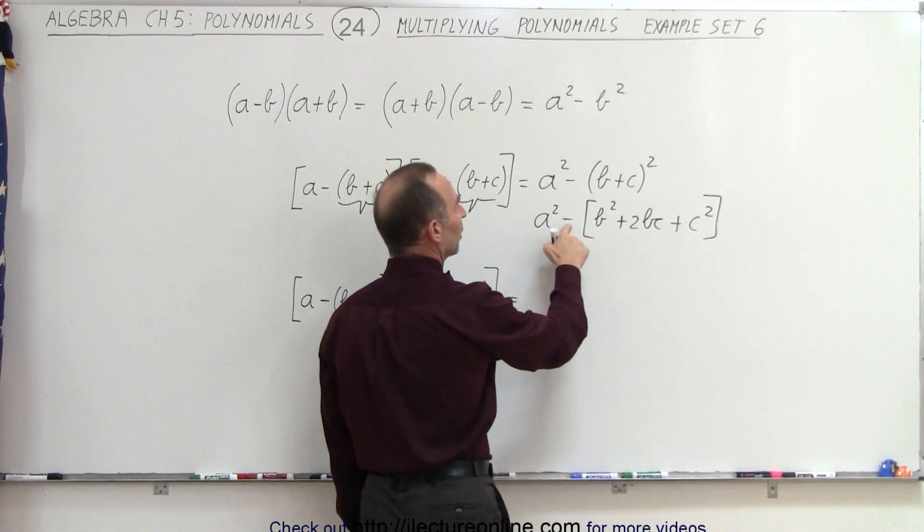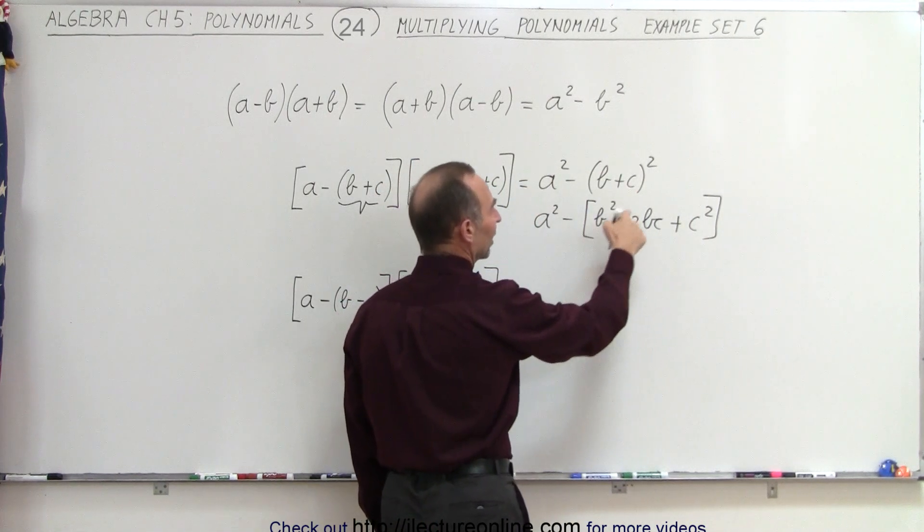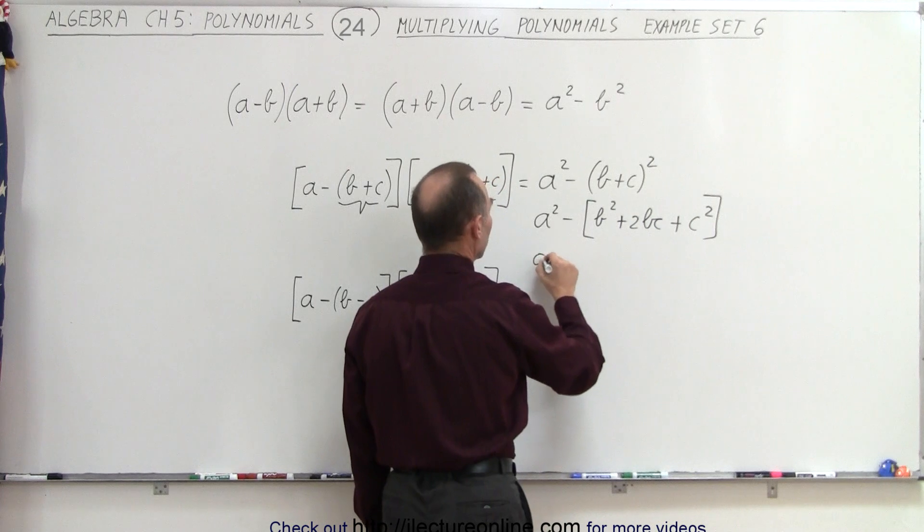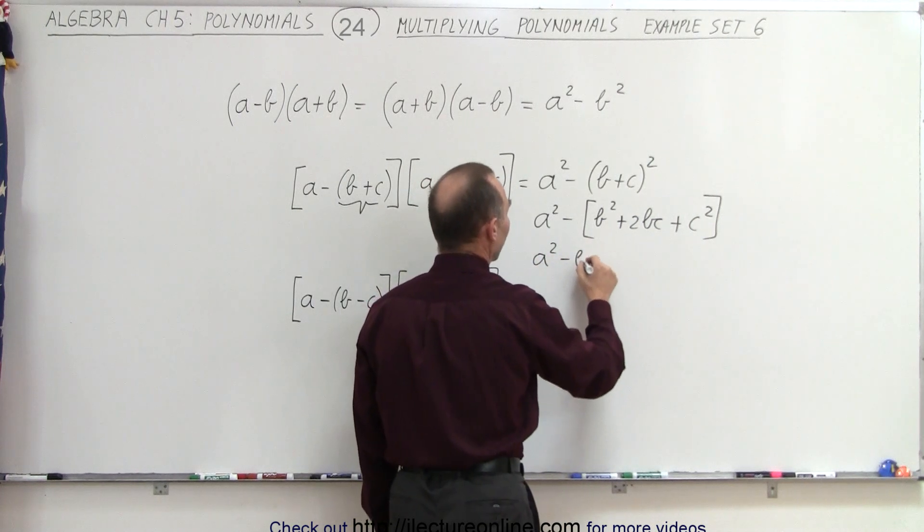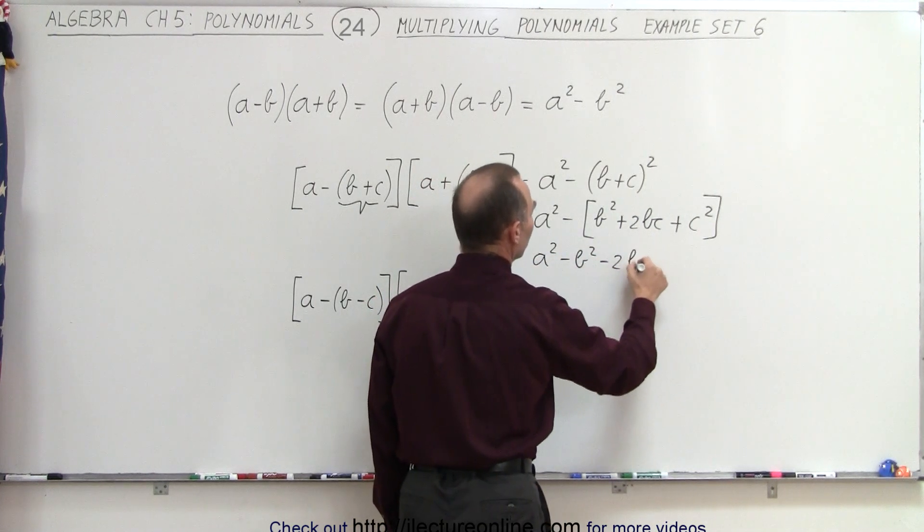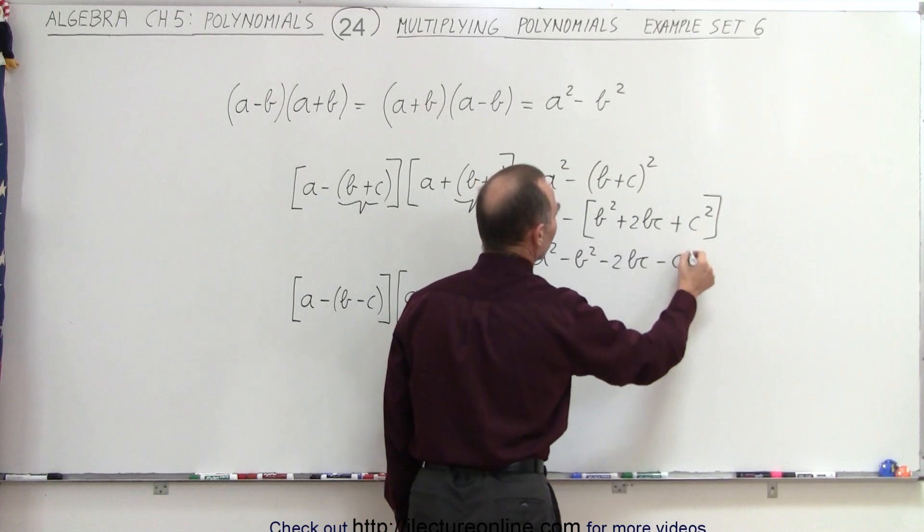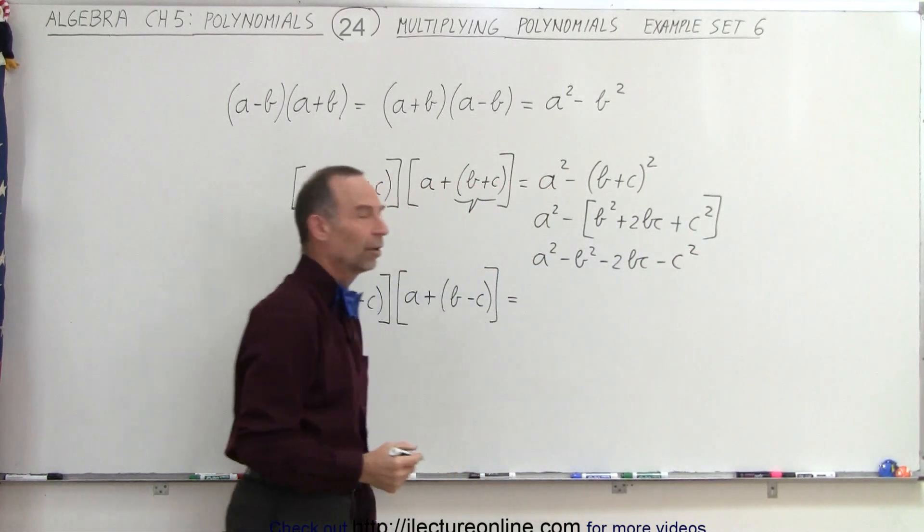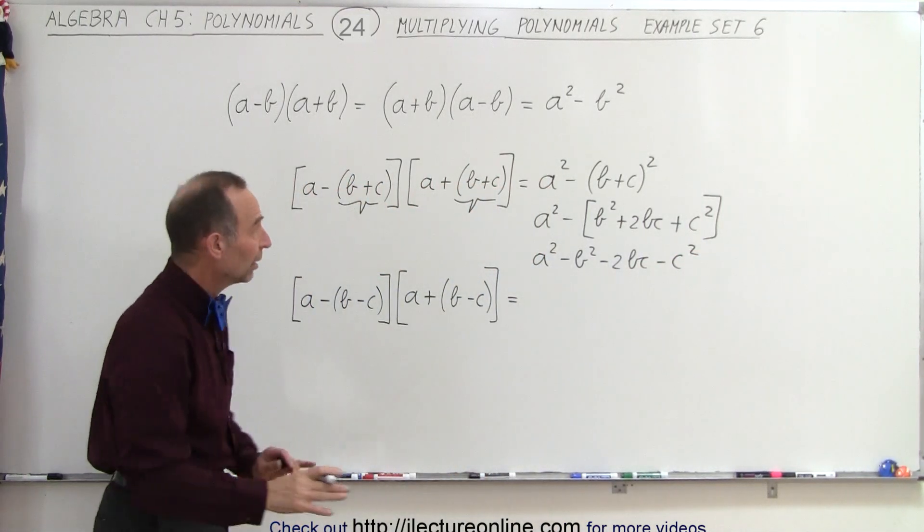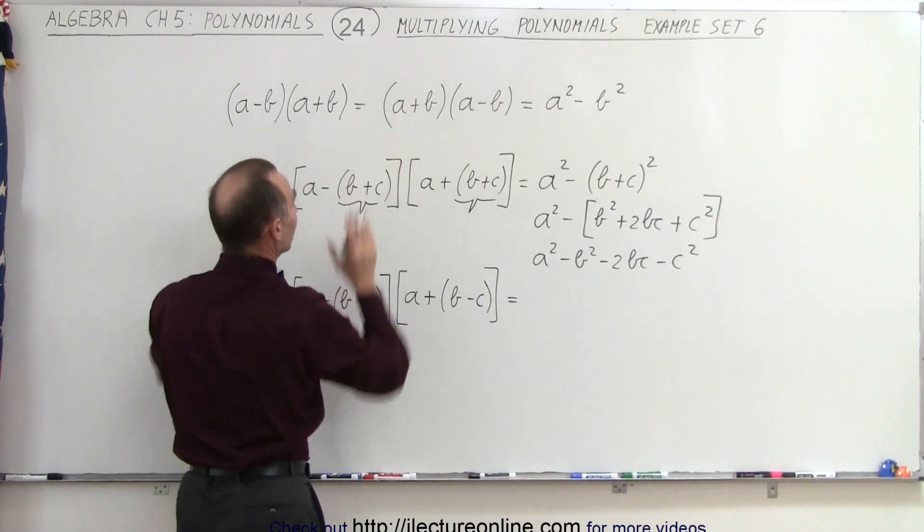And then we could remove the parentheses and apply the negative sign to every term inside, so this could be written as a squared minus b squared minus 2bc and minus c squared, and that would be the result of that one. A whole lot easier when you recognize it would be the same thing as that.